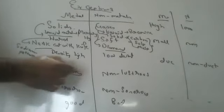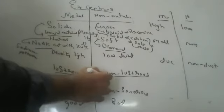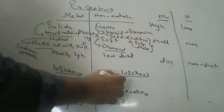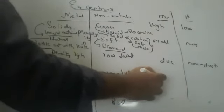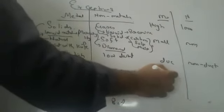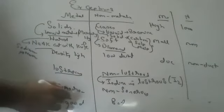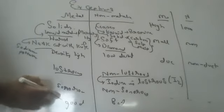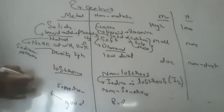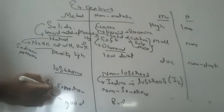Metals are lustrous, and non-metals are generally non-lustrous — they don't shine. But iodine is a non-metal which is lustrous. Iodine is a lustrous non-metal. This is an important exception — iodine is a lustrous non-metal.